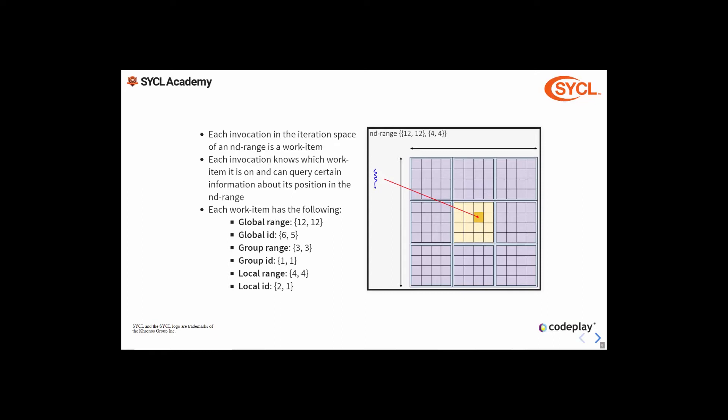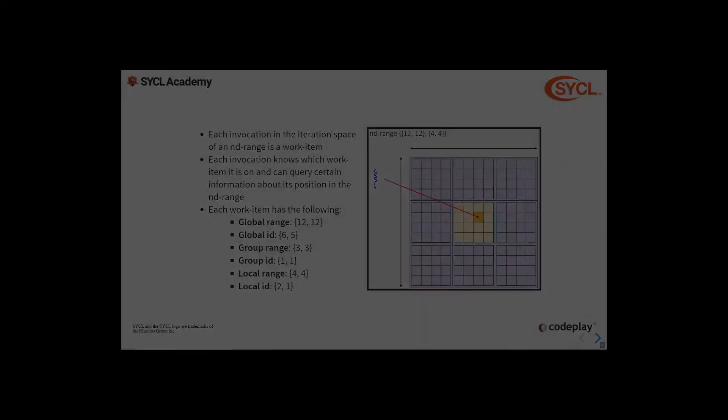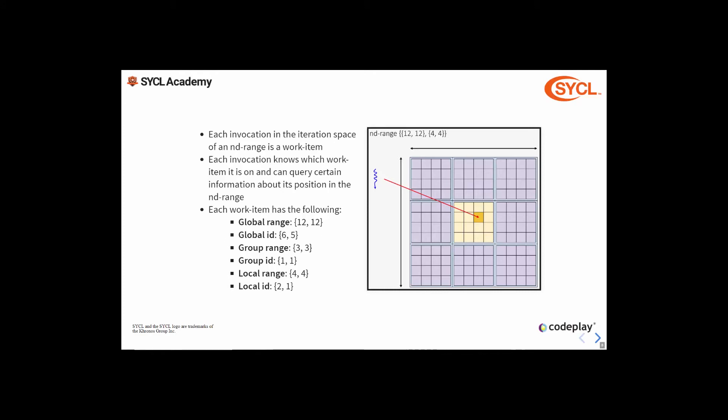Each invocation of the kernel function knows which work item it is and can retrieve information about its position in the ND range iteration space. Each work item has the following knowledge: the global range — the total number of work items in the ND range in each dimension, in this case 12 by 12; the global ID — the index within the global range of the current work item, in this case index 65, highlighted in orange; the group range — the total number of work groups, in this case 3 by 3; the group ID — the index within the group range, in this case index 11, highlighted in yellow; the local range — the total number of work items per work group, in this case 4 by 4; and the local ID — the index within the local range of the current work item, in this case 2,1, highlighted in orange relative to its work group highlighted in yellow.